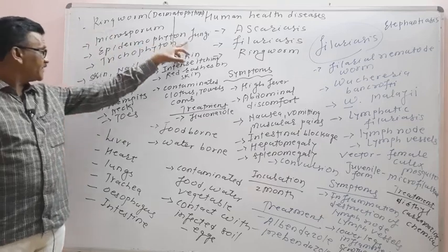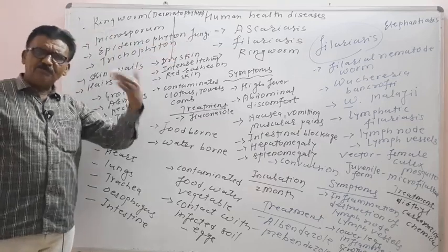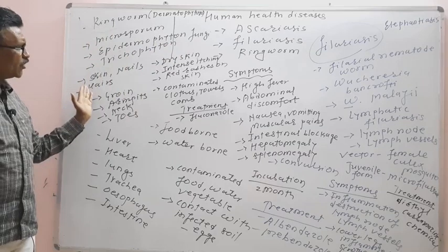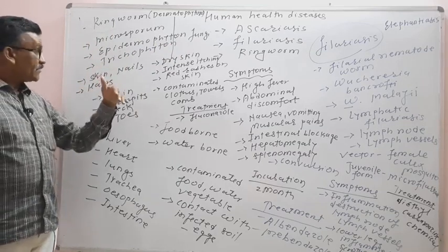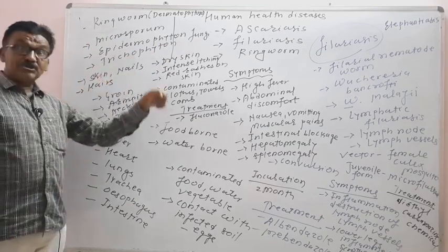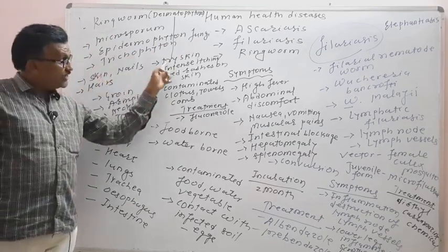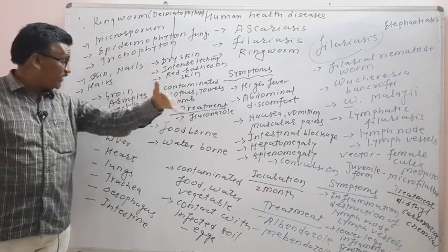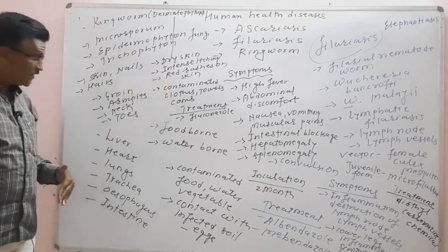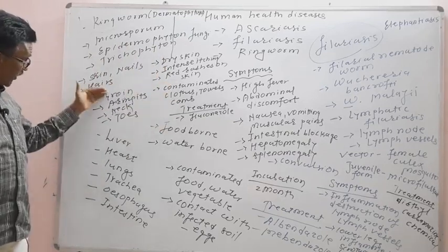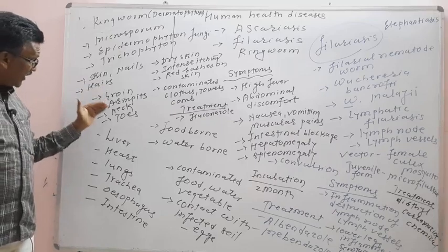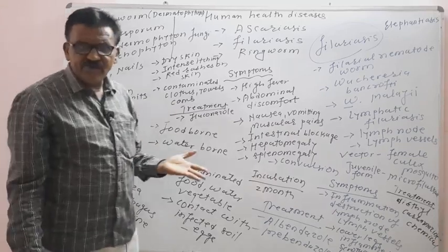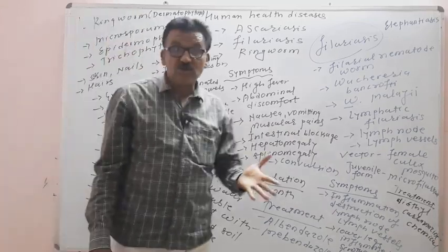Ringworm is a fungal infection affecting the skin, nails, and hair. Symptoms include dry skin, intense itching, and red rashes on the skin. Infection mainly occurs in the groin, armpit, neck, and toes — mostly in the groin region.